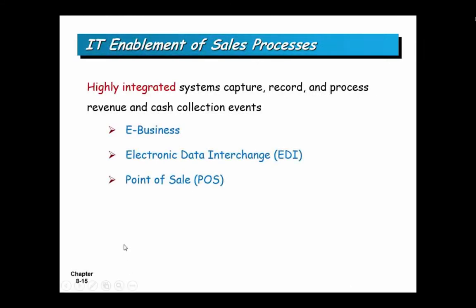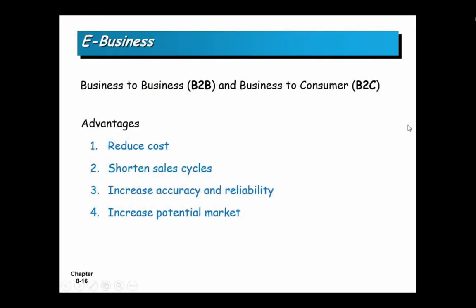We'll talk about three different ways that IT is involved with the sales process: e-business, which you all know about; EDI, which we touched on earlier; and point-of-sale systems, which we discussed at the beginning of the semester. E-business could be either business-to-business or business-to-consumer — you live the B2C model whether you're using Amazon, eBay, or whatever.